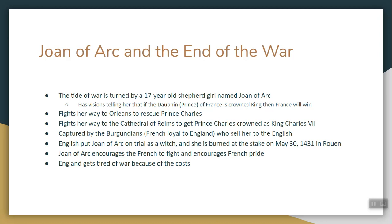Very shortly after this successful crowning, Joan of Arc is captured by the Burgundians — French people who were allies of England. The Burgundians sell Joan of Arc to the English, and the English put her on trial. They accuse her of being a witch and burn her at the stake on May 30th, 1431. Joan of Arc becomes a symbol of French resistance and French pride. Her life and death encourages the French to fight back, and France decides not to lose.